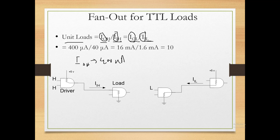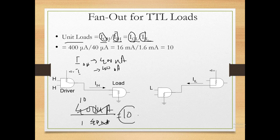For TTL: IOH = 400 microamperes output current, and IIH (input current for logic high) = 40 microamperes. So fan out = 400 / 40 = 10 unit loads. This means with these parameters, one gate output can drive 10 gate inputs. The input requirement is 40 µA and output provides 400 µA, so you can connect 10 gates.